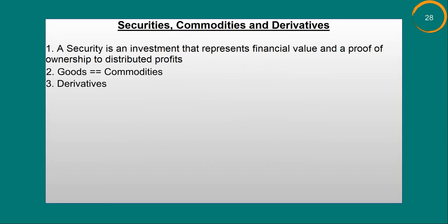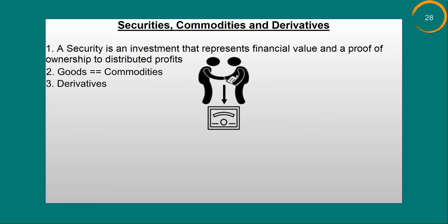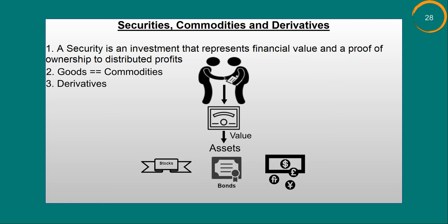Derivatives. In simple terms, derivatives is a contract whose value is based on the underlying financial asset. What are these underlying financial assets? They could be stocks, bonds, currencies, or a mixture of these. The underlying asset could also be a security, in which case the derivatives are called secondary securities.